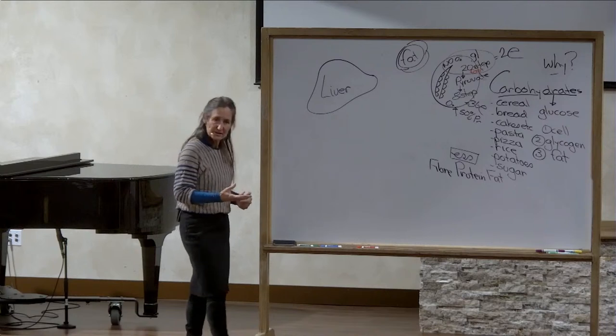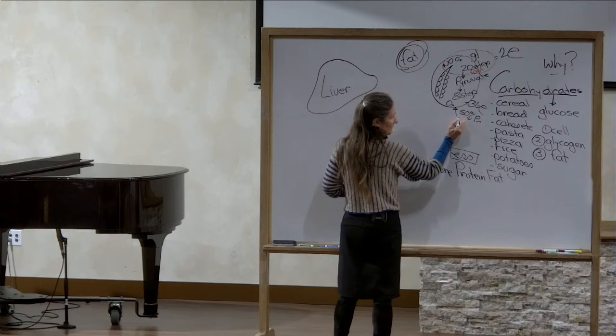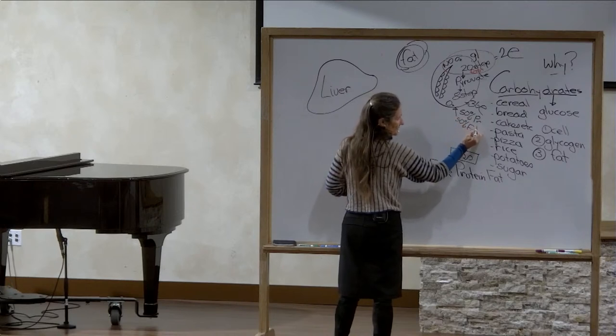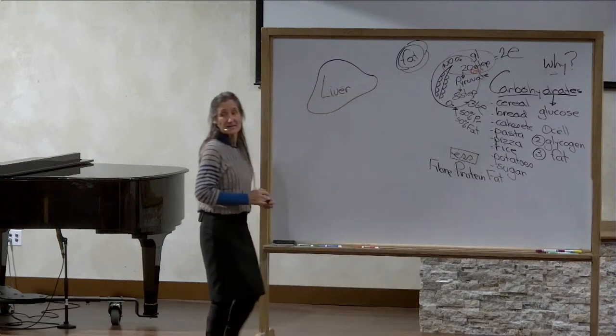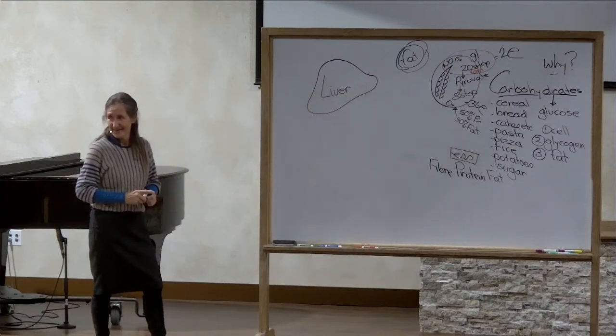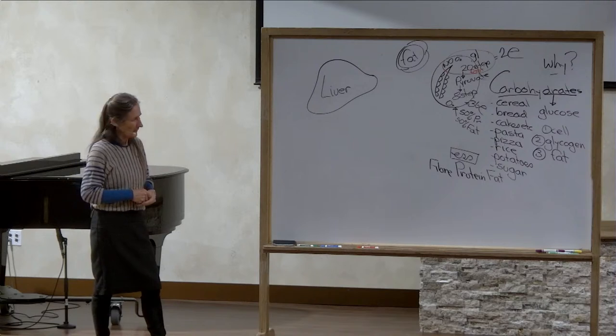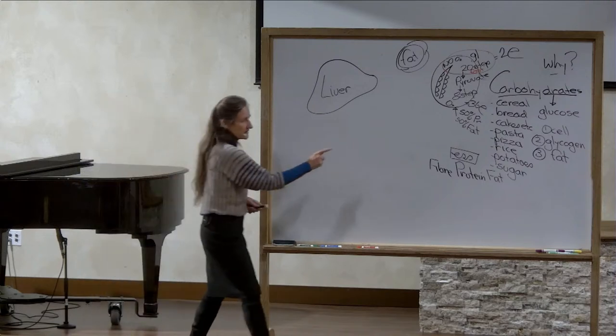Fat's essential. You see, 50% of the membrane around every cell in the body is fat. Except for the brain cell, it's 70% fat. In fact, the brain is the fattiest organ in the body. Now, fat is an essential nutrient.